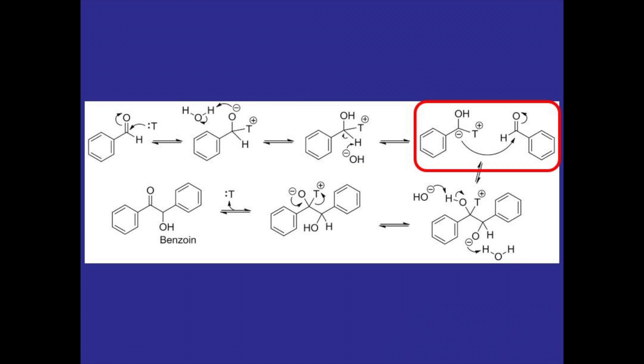Then as that intermediate interacts with hydroxide and water the alcohol group is formed and as the tetrahedral intermediate collapses the ketone group is formed and thiamine is reproduced and the benzoin product is formed.